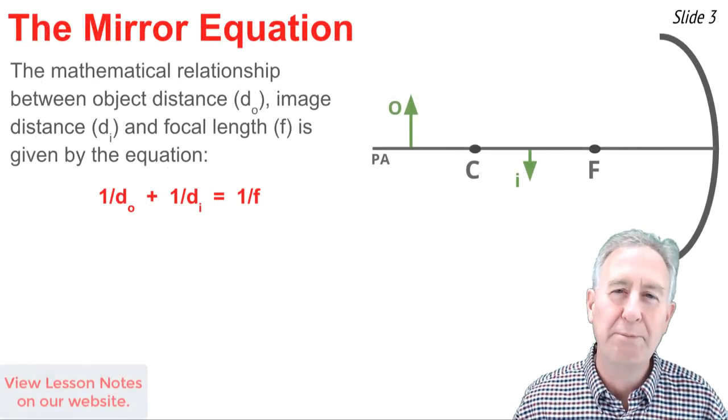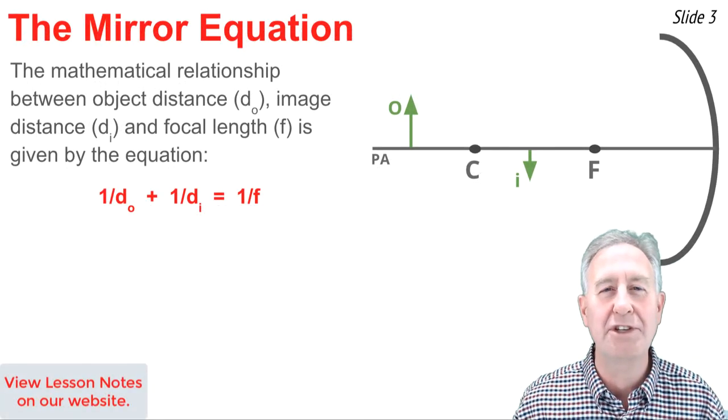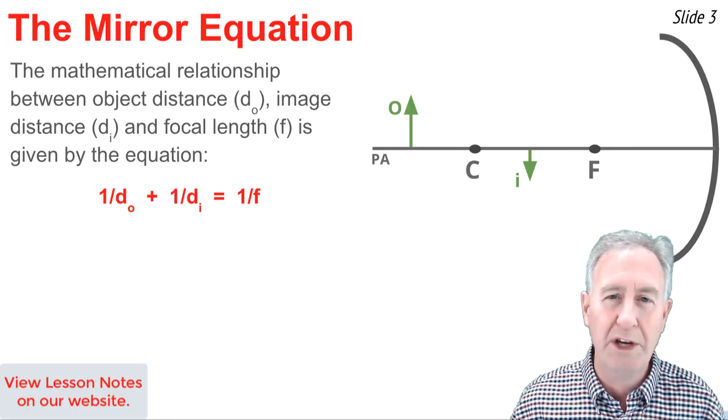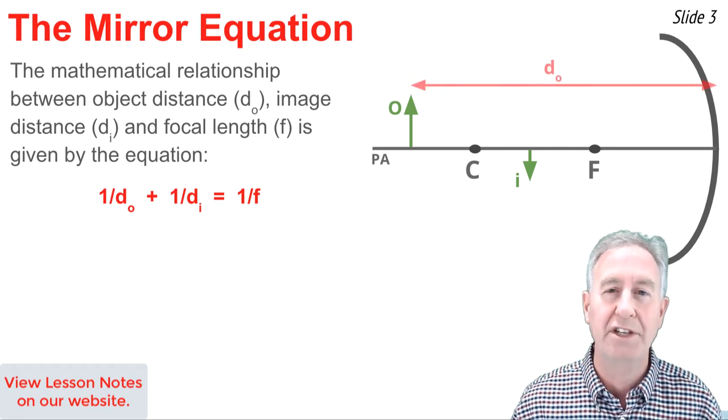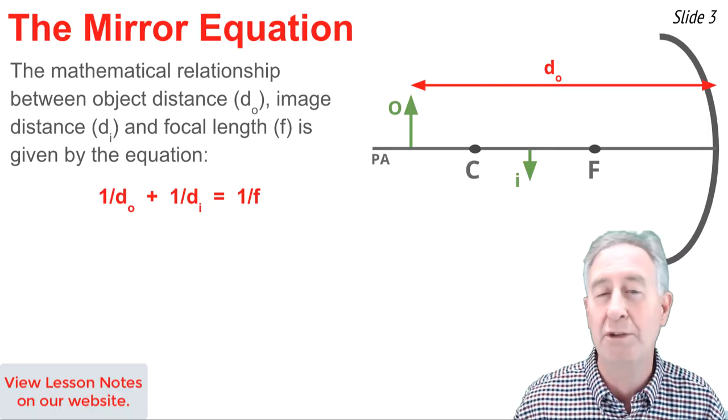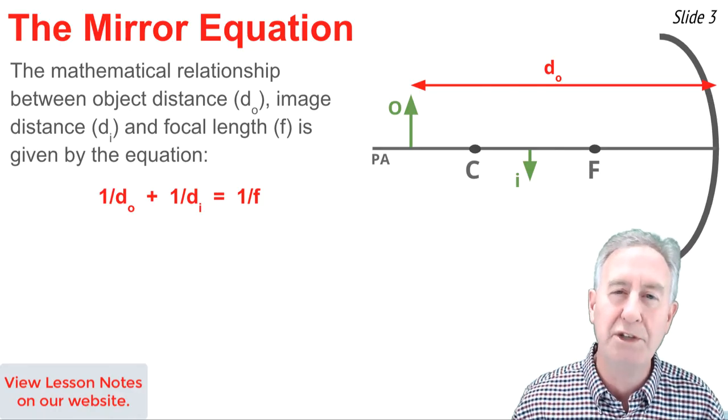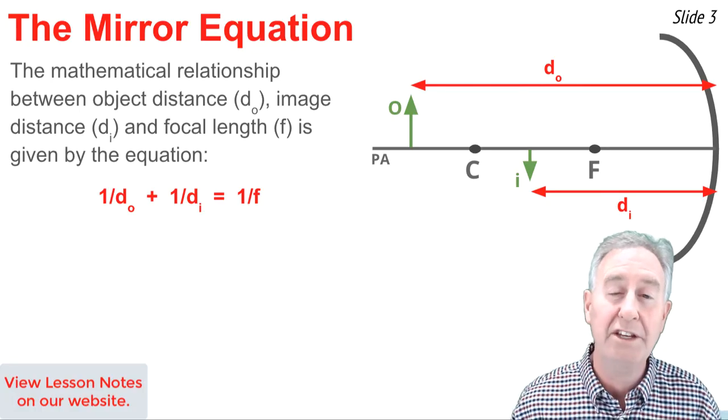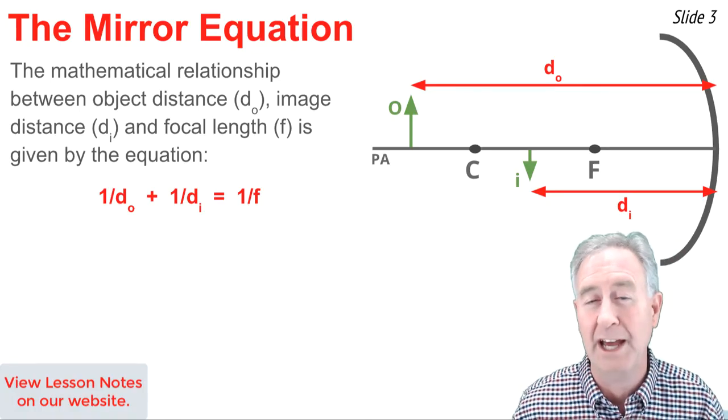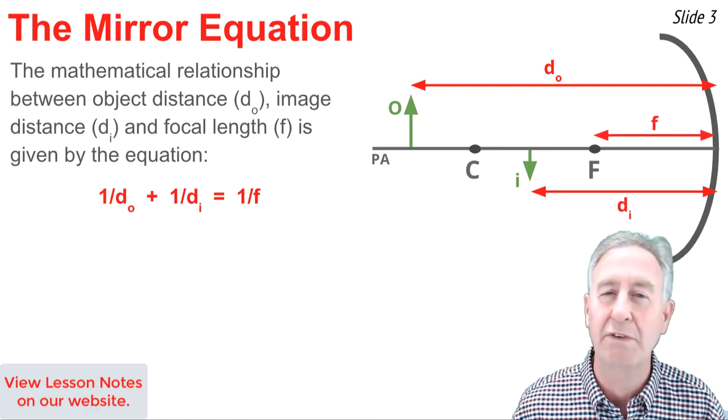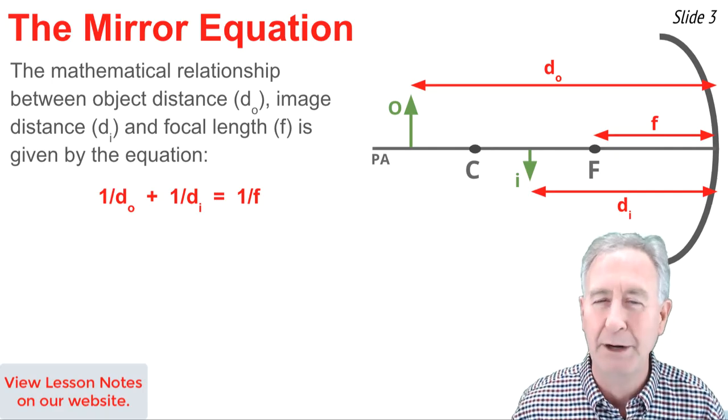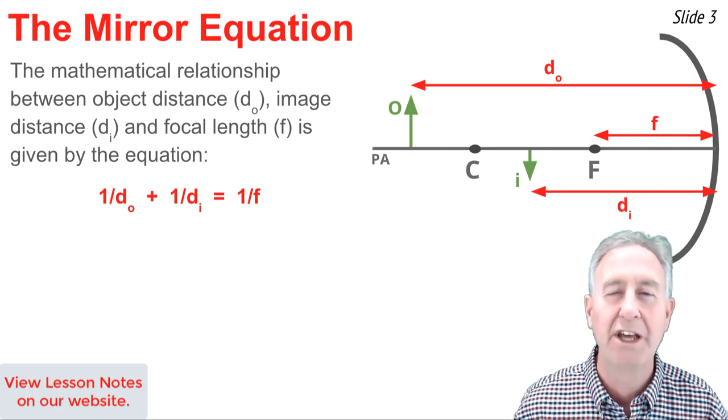The mathematical relationship between the object distance, the image distance, and the focal length are given by this equation. The d_o in the equation stands for the object distance, and it's the distance measured along the principal axis from where the object is located to the mirror surface. The image distance is d_i in that formula, and it is measured along the principal axis from where the image is at to the mirror surface. Finally, f stands for focal length. Focal length is the distance from the focal point to the mirror as measured along the principal axis.